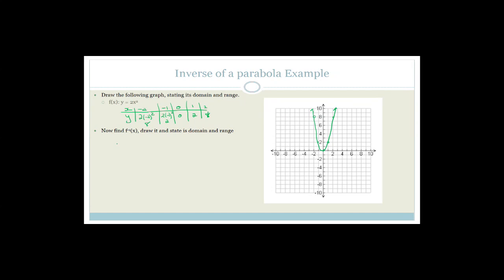Now it says state the domain and range. The domain here is going to be a little different. The domain is all the values for which x will be valid across the x-axis. This graph carries on forever to the left and forever to the right. So the domain is x is an element of real values. The range, however — do you agree the graph does not exist anywhere in the negative y-axis? So we say y is an element of real values for y greater than or equal to 0. Another way to write it: y is greater than or equal to 0 and smaller than infinity.